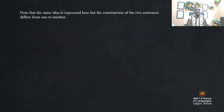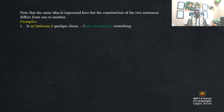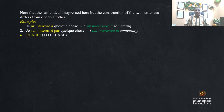Note that the same idea is expressed, but the construction of the two sentences differs. 'Je m'intéresse à quelque chose' and 'je suis intéressé par quelque chose' both mean I am interested in something, but the construction is different.